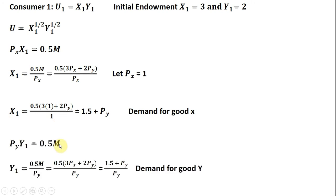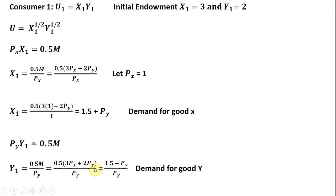Now for consumer 1's demand for good y: the exponent on y is one half, so the consumer spends half their income on good y. Expenditures on y equal 0.5 times m, and dividing through by the price of good y, then substituting income as the initial endowment of x times the price of x plus the initial endowment of y times the price of y, and simplifying, we get consumer 1's demand for good y.